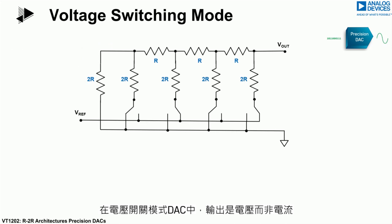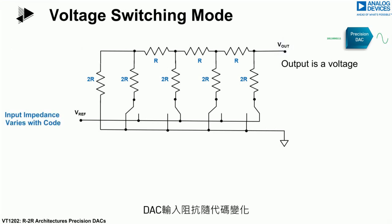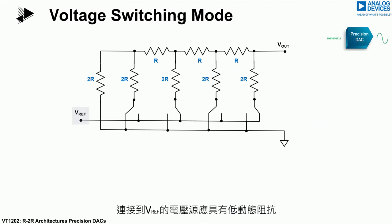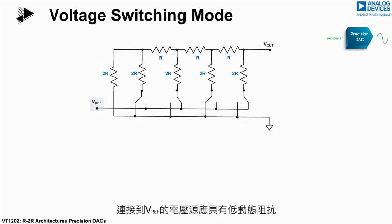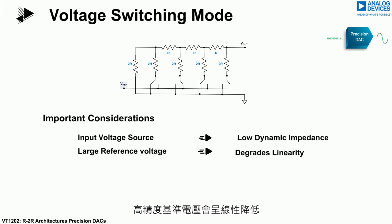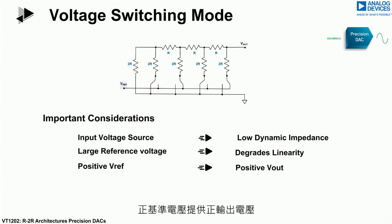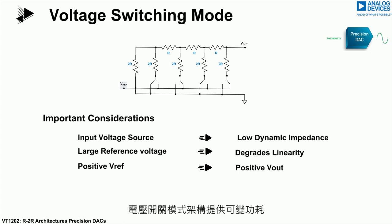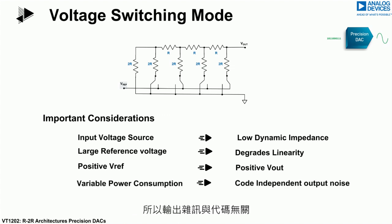In voltage switching mode DACs, the output is a voltage and not a current. The DAC input impedance varies with code and the DAC output impedance is fixed. The voltage source connected to VREF should have a low dynamic impedance. High reference voltages will degrade linearity due to reduced drive available from the CMOS switches used in this architecture. A positive reference gives a positive output voltage, allowing for single supply operation. The voltage switching mode architecture offers variable power consumption, which leads to code-independent output noise.